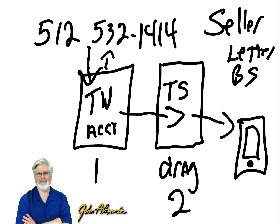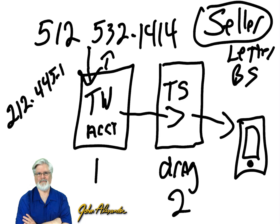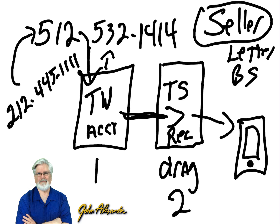So let's say a call comes in — it comes into Twilio, goes into the Studio, and from Studio it sends it to your personal cell phone. That's how the flow works. A seller, for example — their number might be 212-445-1111. They call your Twilio number, it goes through your account, through the Studio where all the directions for that phone call take place, and then it forwards the call to your cell number, say 512-111-1111.